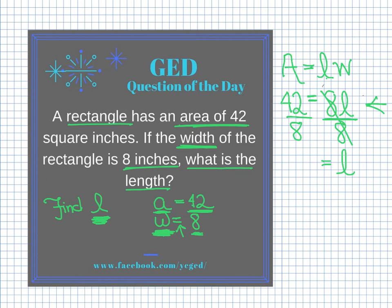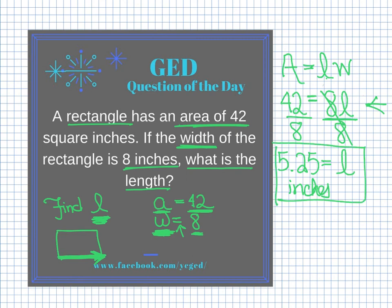42 divided by 8 gives me 5.25. Remember that length is just one of the sides of a rectangle — it's a line — so this will be 5.25 regular plain old inches. Area is measured in square inches, but dimensions like length and width are measured in regular inches. So 5.25 inches is my final answer. If you have any questions, be sure to drop them in the comments.